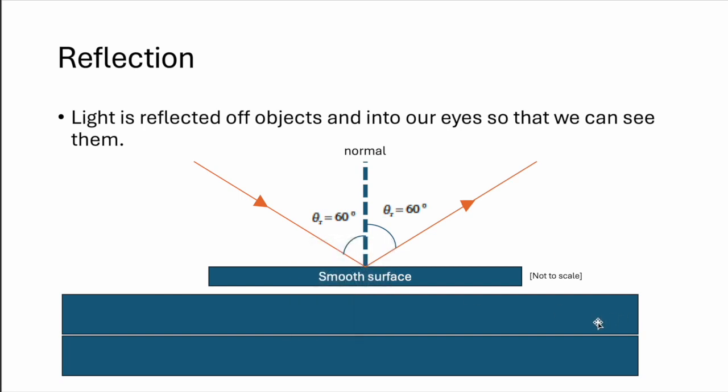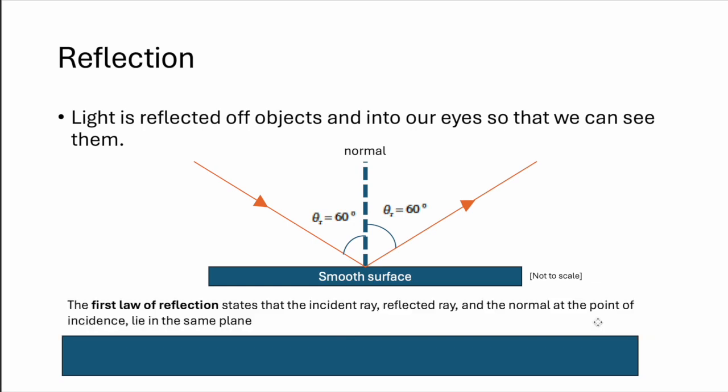As for rough items like a table, you will not be able to see your reflection. So basically, light is reflected off a smooth surface like that with the normal in the middle at 90 degrees. Light that comes in to the surface is called the incident ray and it exits as the reflected ray.